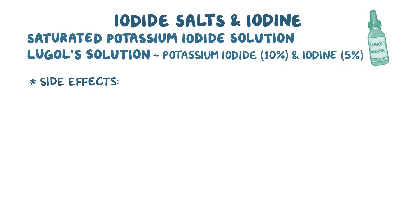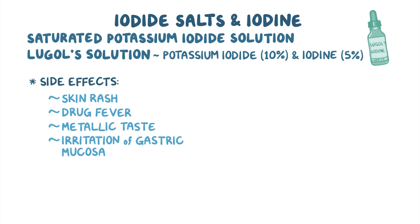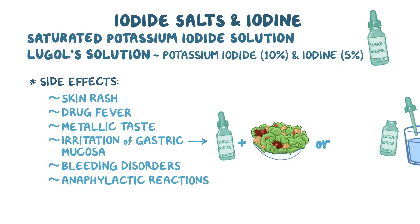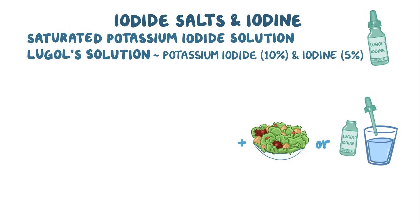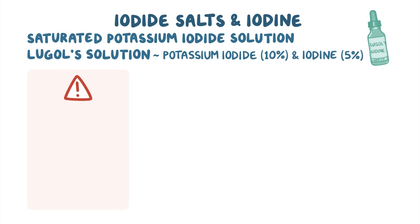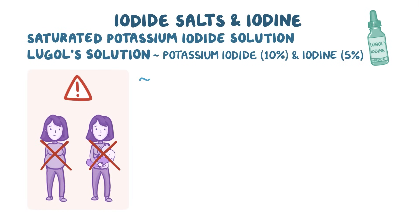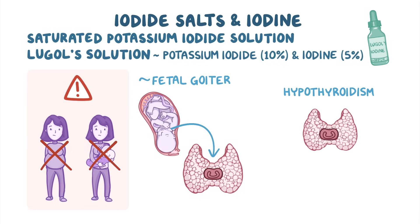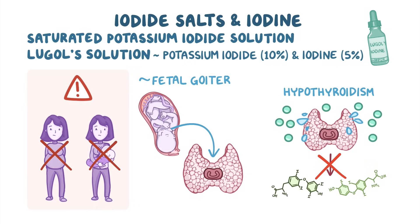As far as side effects go, these medications are associated with skin rash, drug fever, metallic taste, irritation of gastric mucosa, and bleeding disorders, but on rare occasions they can also cause anaphylactic reactions. To avoid mucosal irritation, individuals should take iodides with food or diluted with fluids. These medications should be avoided during pregnancy and breastfeeding because they can cause fetal goiter, which is an abnormal enlargement of the thyroid gland and hypothyroidism. Hypothyroidism occurs because the immature thyroid gland is unable to adapt to high levels of iodine and resume the synthesis of thyroid hormones — therefore this type is also known as iodine-induced hypothyroidism.